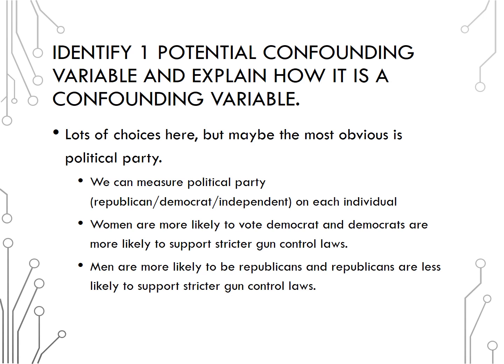Let's have one review problem here too. Identify one potential confounding variable and explain how it is a confounding variable. There are lots of choices here, but maybe the most obvious would be political party. We can measure the political party, Republican, Democrat, or Independent, on each individual. Women are more likely to vote Democrat, and Democrats are more likely to support stricter gun control laws, whereas men are more likely to be Republicans, and Republicans are less likely to support stricter gun control laws. We see this confounding variable can be measured on each observational unit, is related to both the explanatory and response, and helps to explain the relationship seen in the data.